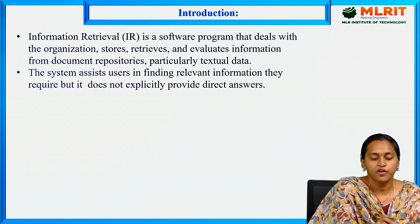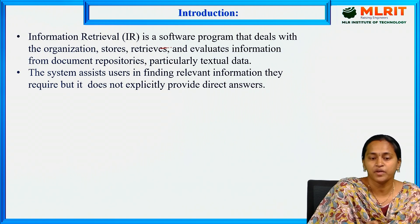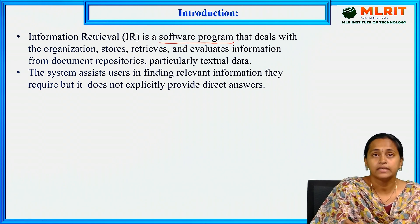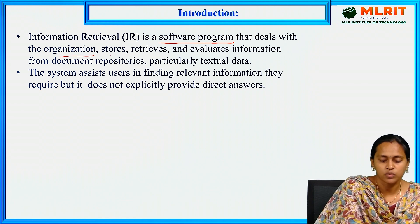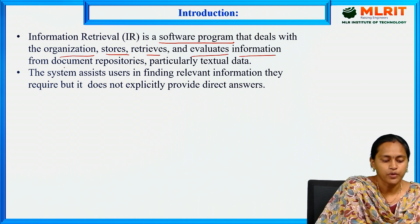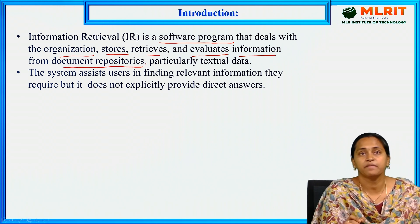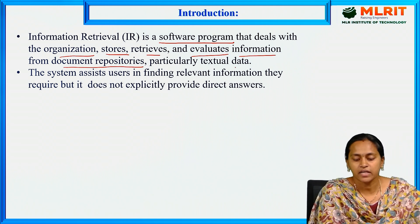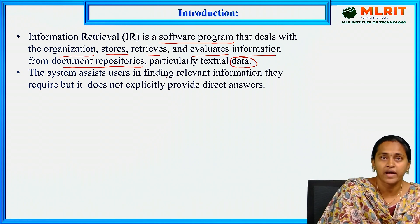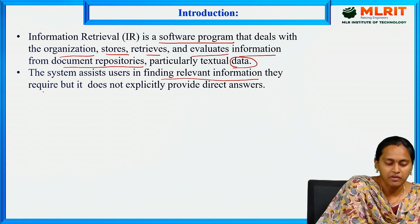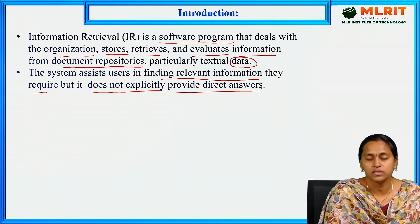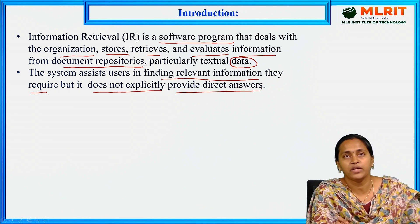Coming to the introduction: an information retrieval system is a software program that deals with the organization, storage, retrieval, and evaluation of information from document repositories — that means databases — particularly textual information. The system assists users in finding relevant information they require, but it does not explicitly provide direct answers.